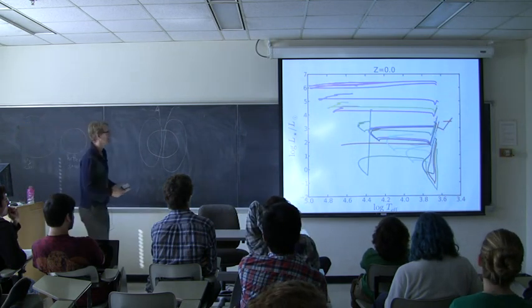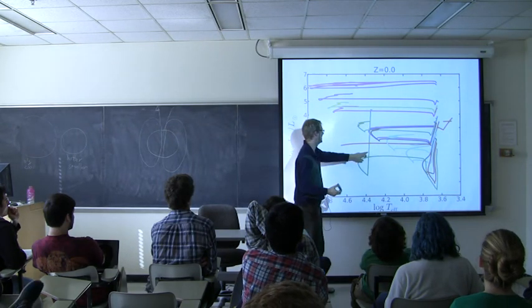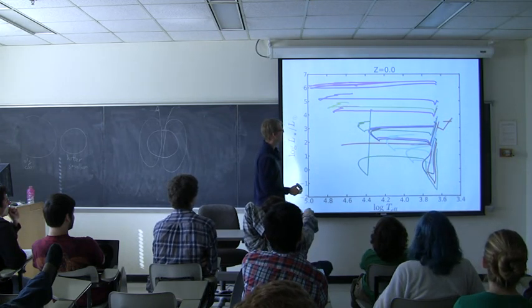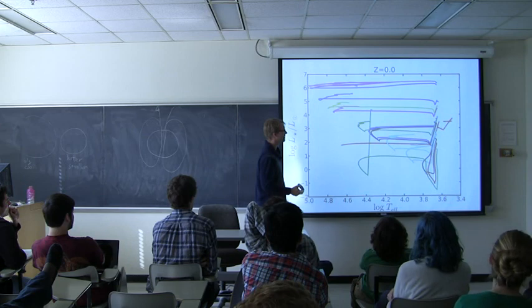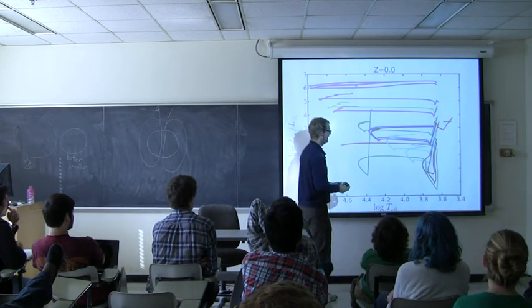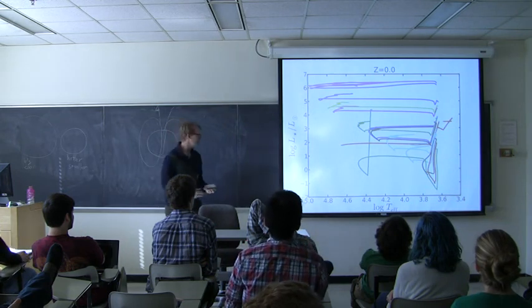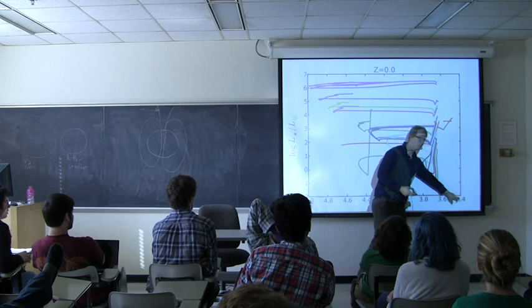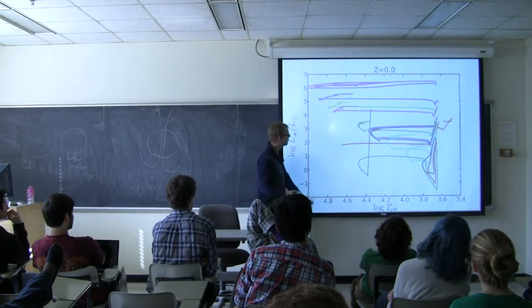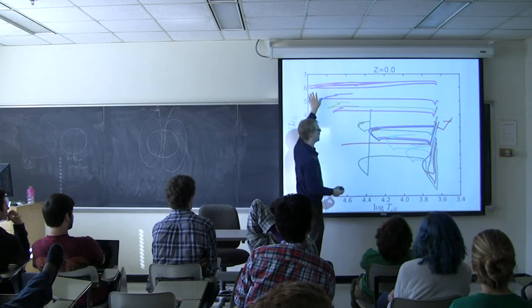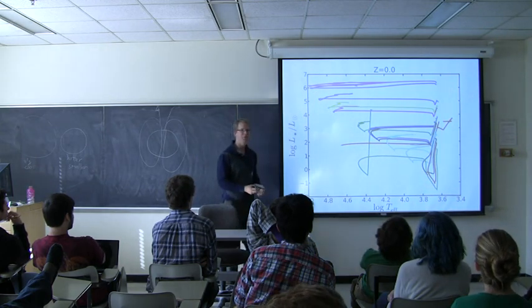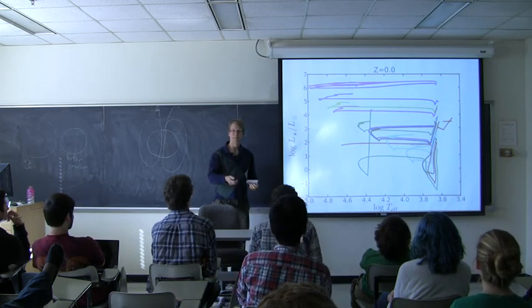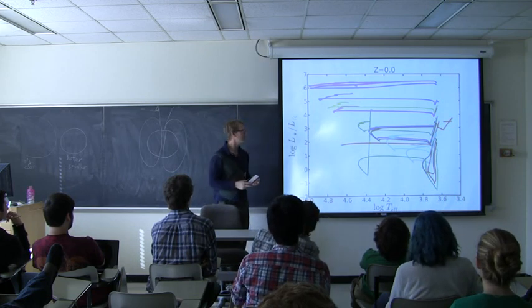Now if we look at the z equals zero case, yeah, ignore the big green spike. Not sure what happened here. I'm not saying it's wrong, but suspicious. So there that is. One thing to note is the other, this is equal to zero. This goes from 3.4 to 5, and the other one only went to 4.6. So these stars up here are a lot hotter than those other stars. So when we turned down, when we turned the metallicity to zero, all of a sudden the stars got hotter.